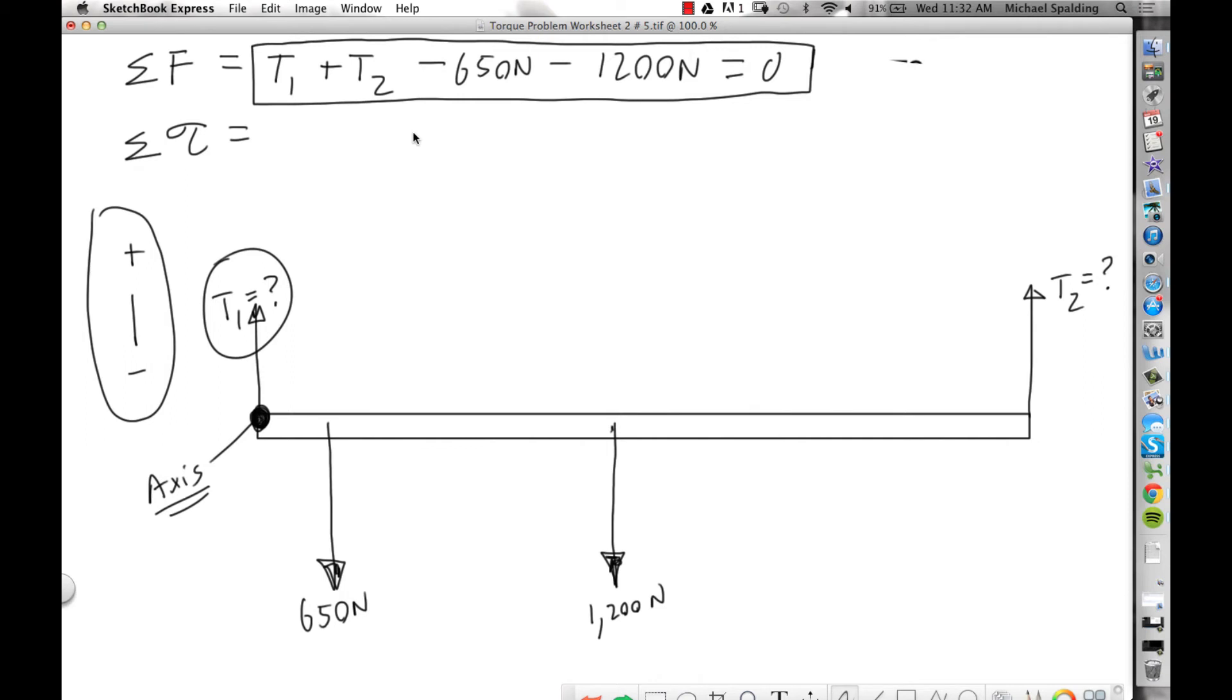Now just so we're clear, you could stick the axis in some random spot—it's doable, it would just be a lot harder, you know, more work. So let's make life easy and put axis at T1. All right, so let's label our distances.